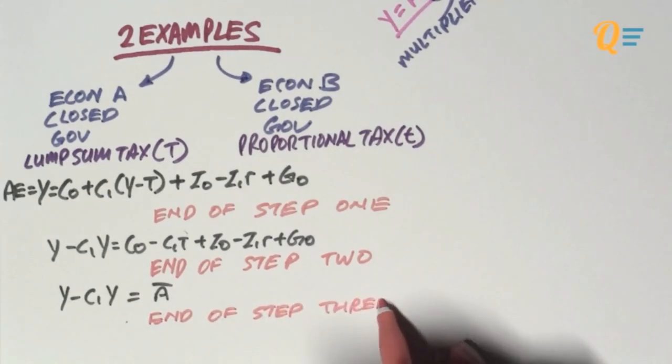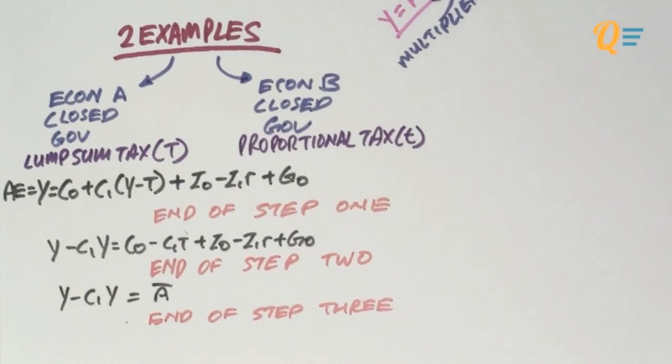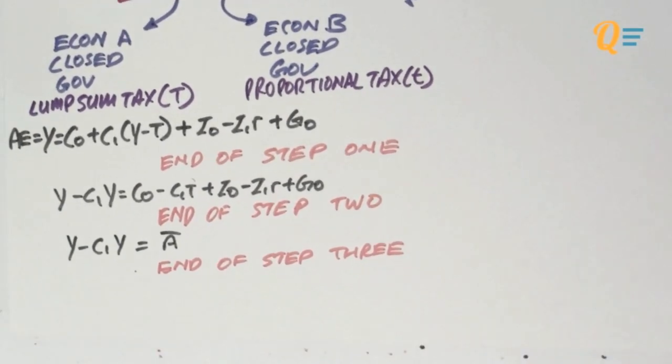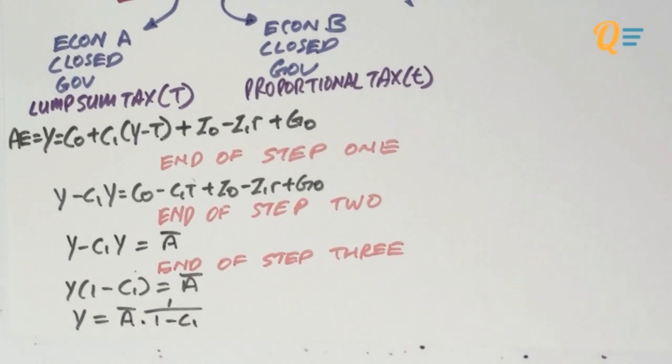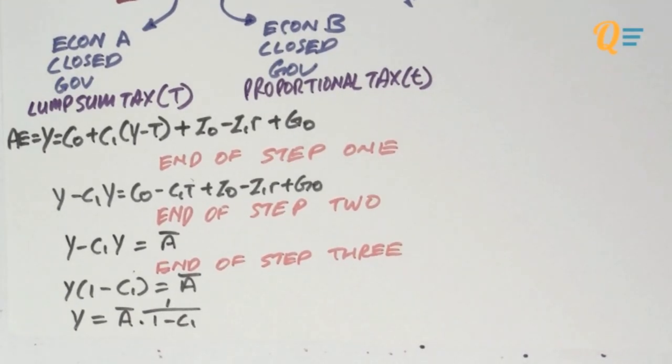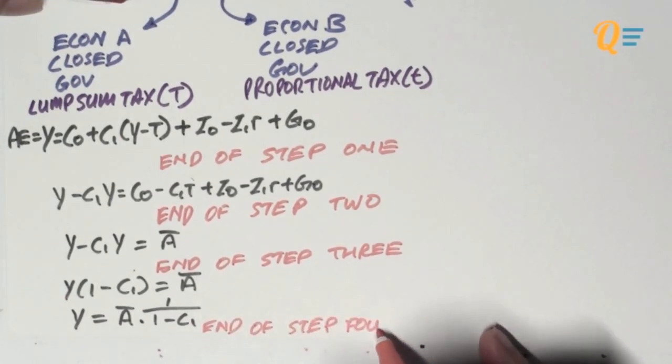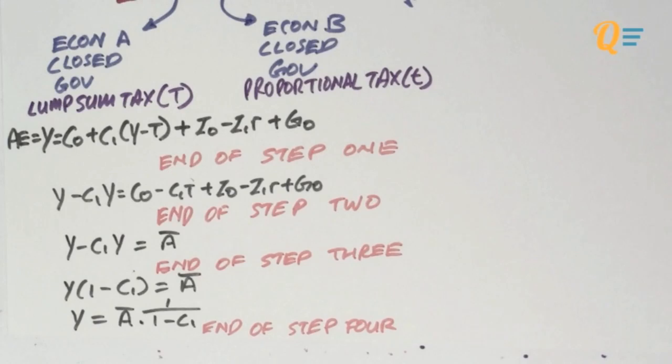So, step three would be to group all the right-hand side stuff into A bar. And, as you can see over here, I think this is probably the easiest part. And step four, I need to make Y the subject. So, I'm going to factorize Y out of the left-hand side and I'm going to divide both sides by 1 minus C1. So, that is the end of step four.